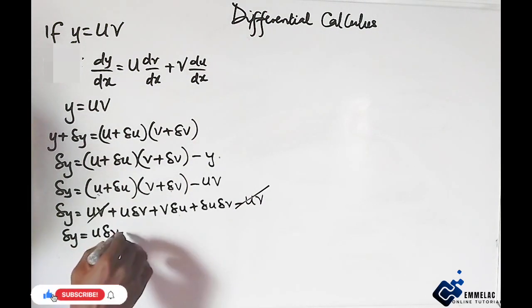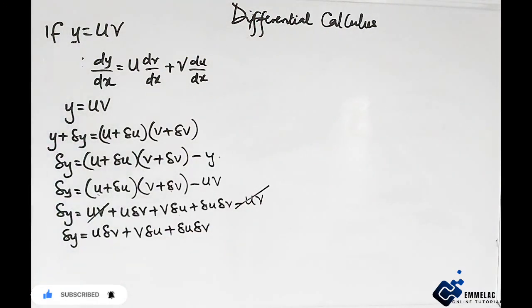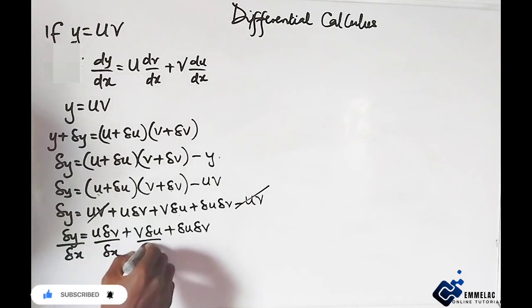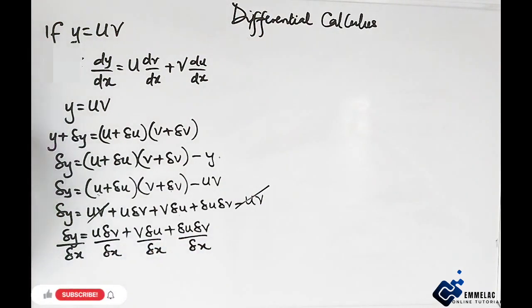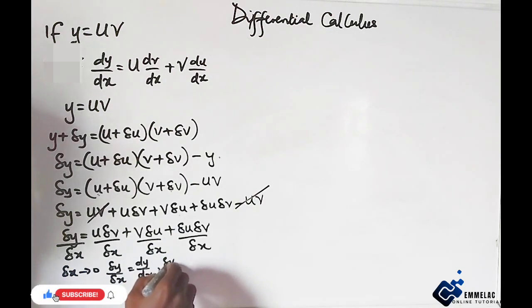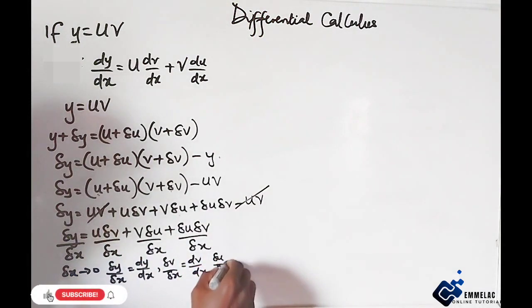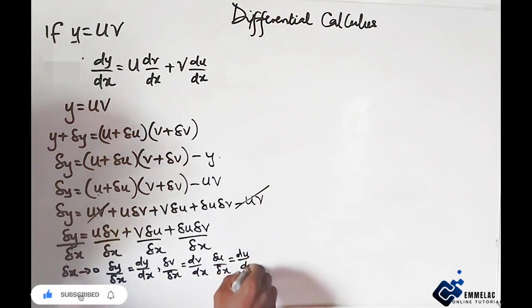At this point now we need to divide through by change in x. So here we have change in x, change in x, and change in x. At this point now, as change in x tends to 0, change in y over change in x becomes dy/dx. In the same way, change in v over change in x becomes dv/dx.